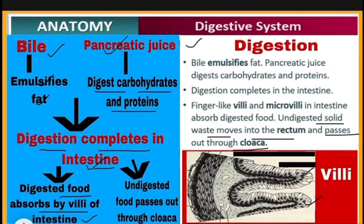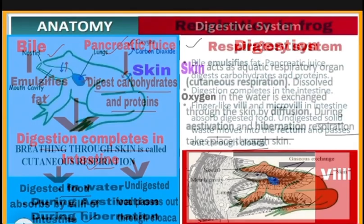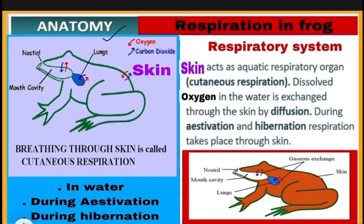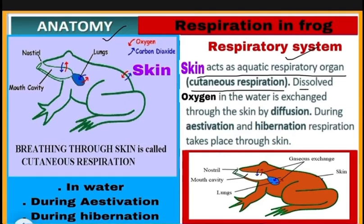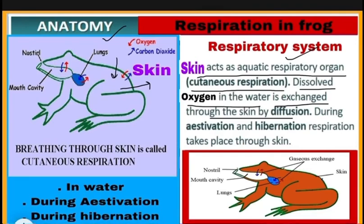Frogs respire on land and in water by two different methods. In water, the skin acts as the aquatic respiratory organ — this is called cutaneous respiration. Dissolved oxygen in water is exchanged through the skin by diffusion; oxygen enters the body and carbon dioxide exits through the skin. This respiration also takes place during winter.